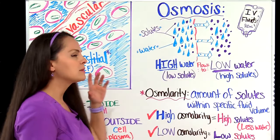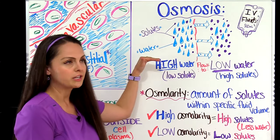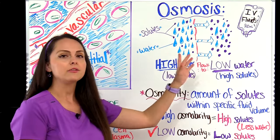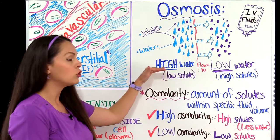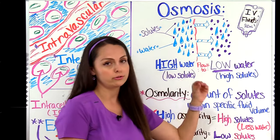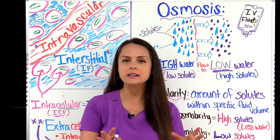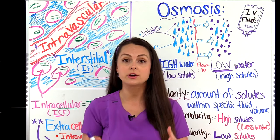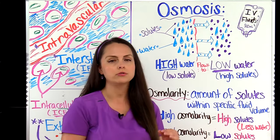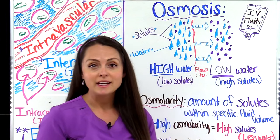Osmosis is a process where water is going to move from a fluid of a higher water concentration to a fluid of a lower concentration. In other words, water is going to move from a fluid that has a low solute concentration to a fluid that has a higher solute concentration. And it does this passively — it doesn't need any energy or anything from the cell. It does this on its own through a semi-permeable membrane, which is only permeable to water molecules.